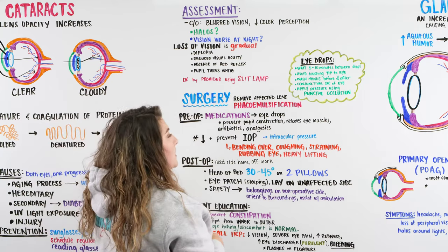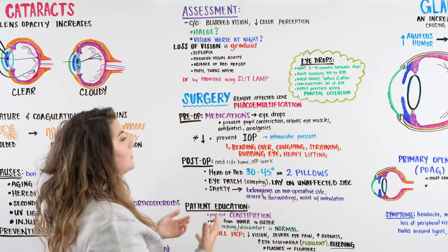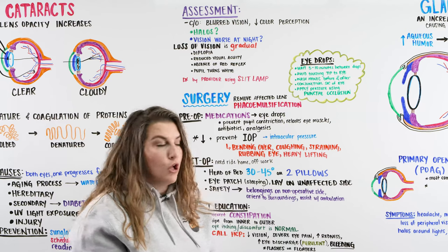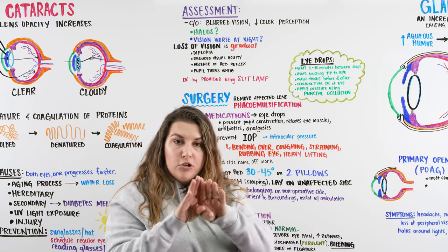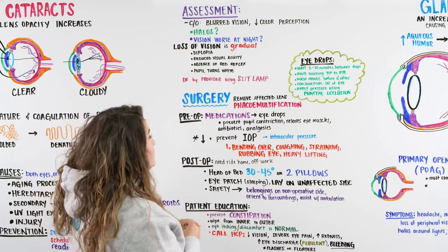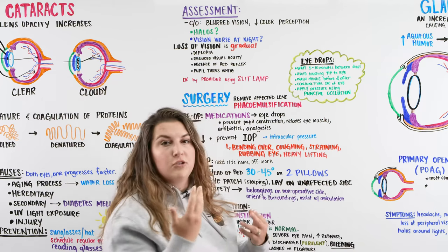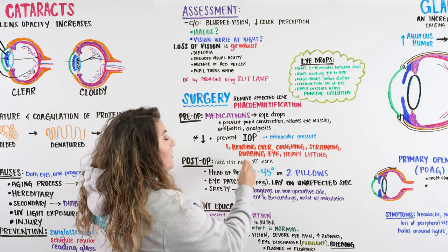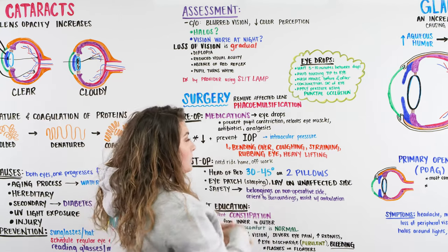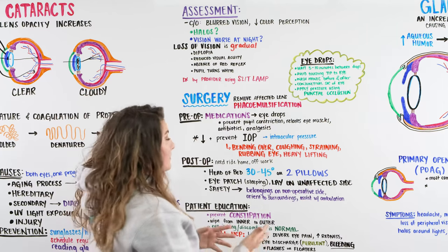After surgery, patients may administer antibiotics or analgesics as eye drops to aid healing and prevent infection. The most important post-op teaching is keeping intraocular pressure low — because there's an incision in the eye, increased pressure could cause it to open. Teach patients to avoid bending over, coughing, straining, bearing down (consider stool softeners), rubbing the eye, and heavy lifting. Ensure they have a ride home after the outpatient surgery, and confirm their job duties if physical activity restrictions apply.